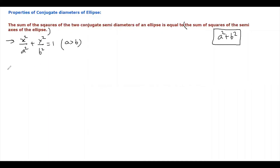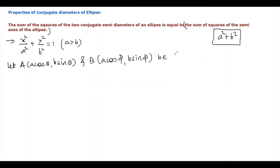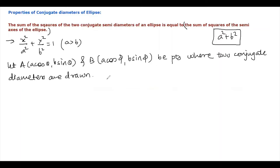Now look at the method. I'm assuming point A as (a cos θ, b sin θ) and point B as (a cos φ, b sin φ). These are the points on the ellipse from which the two conjugate diameters are drawn. Since diameters pass through the center O of the ellipse, the semi-diameters are OA and OB.